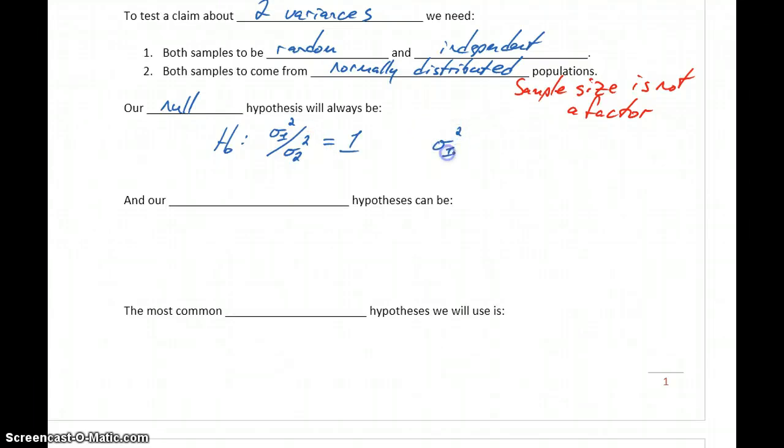The null hypothesis is that the ratio of those variances is one, or in a different form, sigma squared one equals sigma squared two. Our starting assumption will always be that two variances are equal.